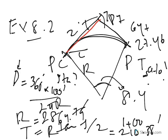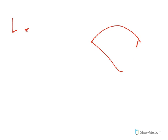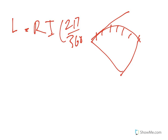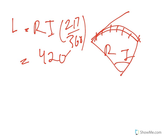We can see a link in the description. If we form this part, the formula is 2.5 over 360 degrees. The radius of the curve is L.